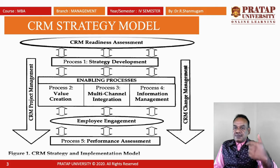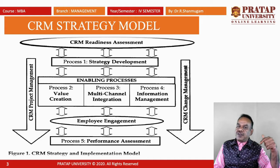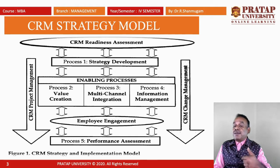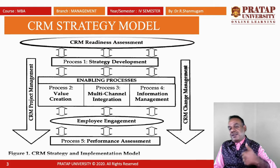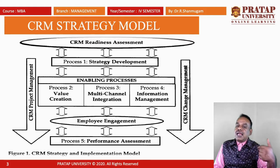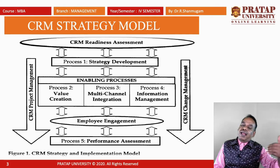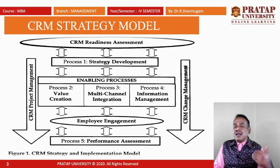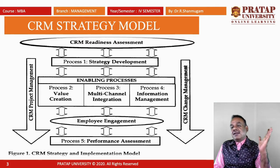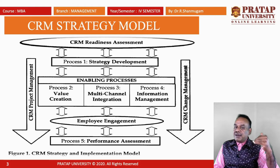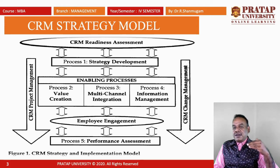Based on the CRM strategy and implementation model: process one is strategy development, which leads to the enabling process. Under process two — value creation — it may be a product or a service. Process three is multi-channel integration, that is supply chain management. Process four is information management leading to employee engagement, covering recruitment, selection, training, and retraining. Process five is performance assessment, which leads to CRM project management and CRM change management.